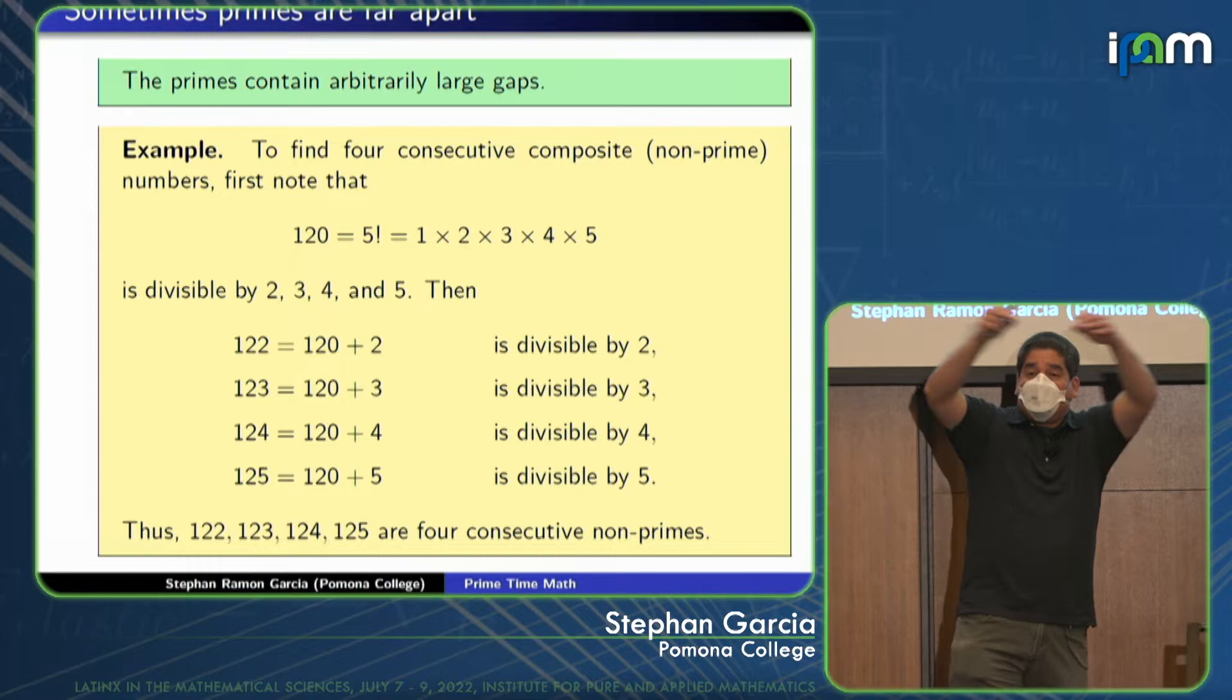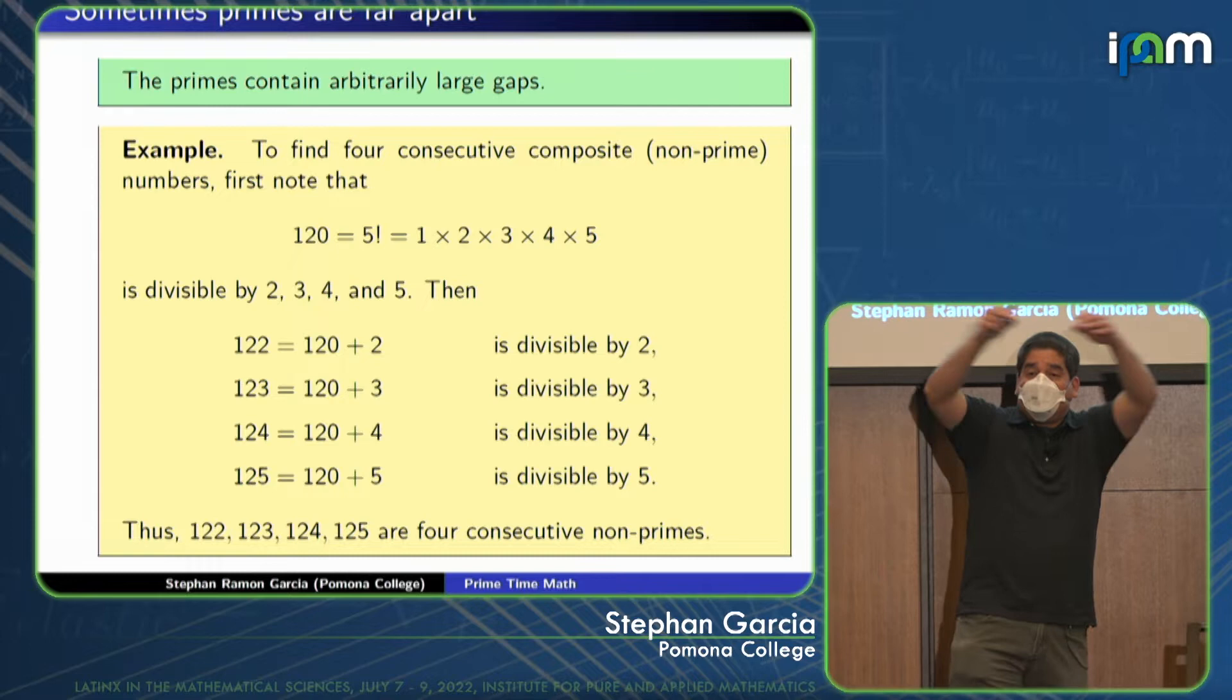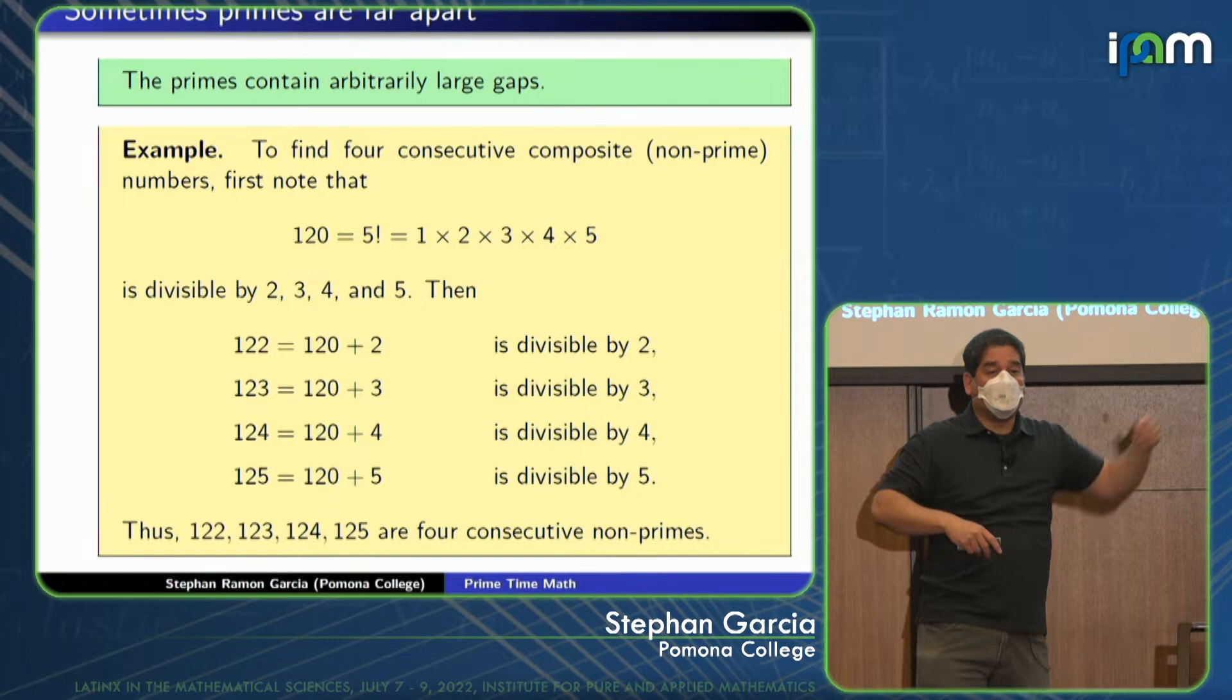So what I have now is a string of four composite numbers in a row. There's nothing stopping me from doing this for 100 billion. If I wanted to find 100 billion composite numbers in a row, that desert in the prime numbers exists there somewhere out there in the dot, dot, dot realm. When we say 1, 2, 3, dot, dot, dot, it's somewhere way out there, light years away, but it still exists.